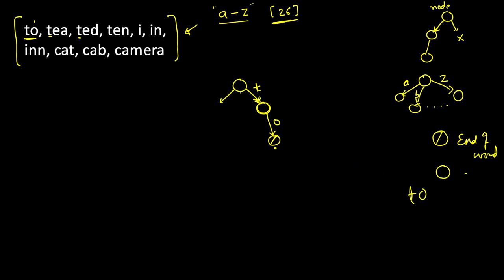For example, 'o' here is the end of word for 'to'. But if we want to insert 't-o-n-e', we follow the same path — we come here, see that 't' is already present, go to 'o' which is also already present, then check 'n' — it's not there, so we create a node for 'n'. Next, 'e' is also not there, so we create a new node and assign it to the fifth child (since 'e' is the fifth letter), and mark it as end of word. So 'to' is a valid word and 'tone' is also a valid word.